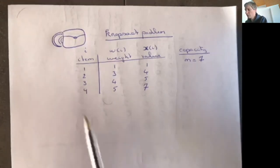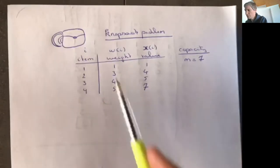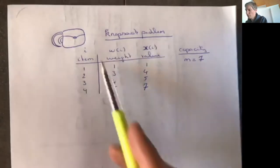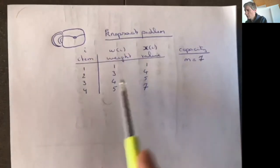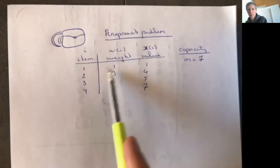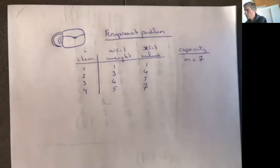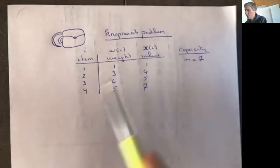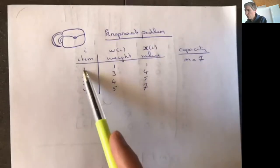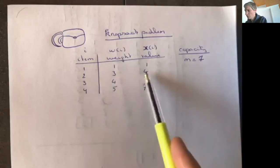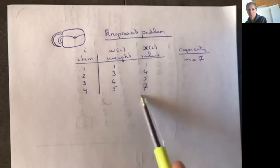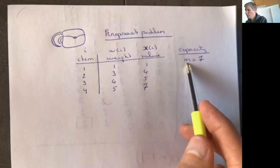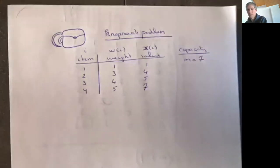Here is an example: you have four items, every item has a weight w_i for item i. For example, item one has weight one, item two has weight three, and so on. Every item also has a value — item one has value one, item two has value four, and so on. You have a total capacity, which we denote by m, of seven.